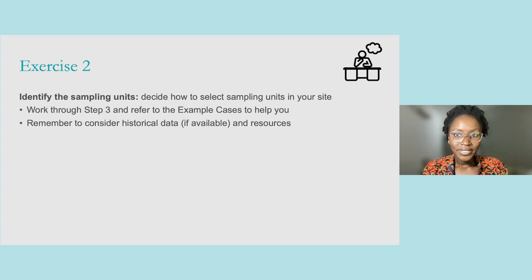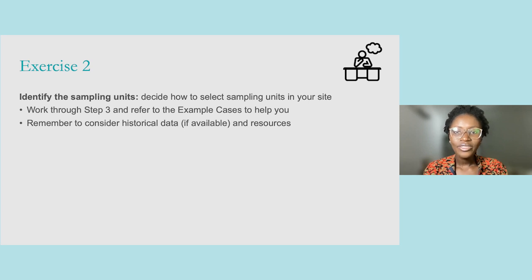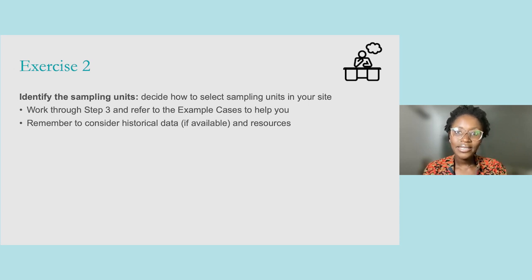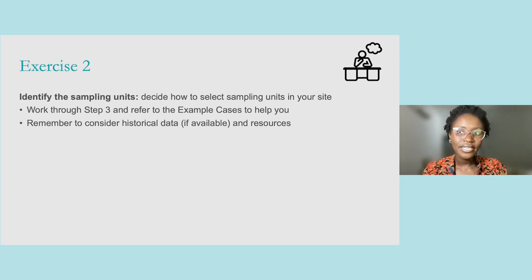Now it's your turn. In this exercise, decide how you will select sampling units in your site. Walk through Step 3 and use the example cases to help you, and remember to consider historical data that might exist as well as the available resources to do this work. Pause the video now. When you're finished, let's meet again on the next slide.